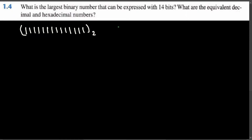The next question asks for the equivalent decimal and hexadecimal numbers. To convert any number from any base to decimal, you look at the associated weight and multiply by the corresponding digits. For a binary number, the weight of the first digit is two to the power zero, the second is two to the power one, then two squared, two cubed, and so on up to two to the power thirteen.